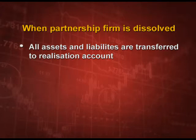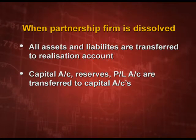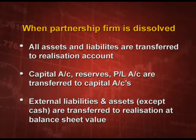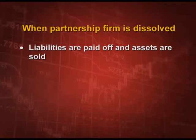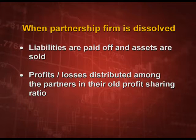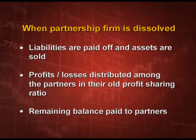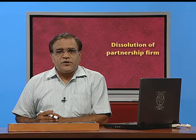When the partnership firm is dissolved, all assets and liabilities are transferred to the Realization Account. Capital accounts, reserves, and Profit and Loss account are transferred to capital accounts. External liabilities and assets except cash are transferred to Realization Account at balance sheet value — not the realizable value. Liabilities are paid off and assets are sold and realized, and whatever profit or loss arises is distributed among the partners in their old profit sharing ratio. Whatever balance remains in the partner's capital account is then paid off and the business is over.